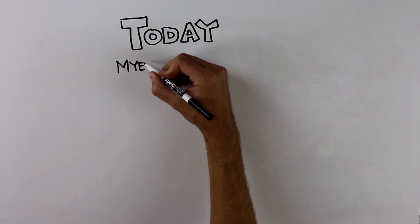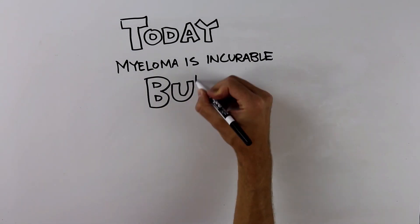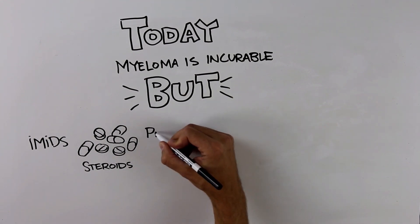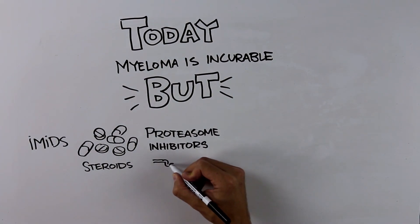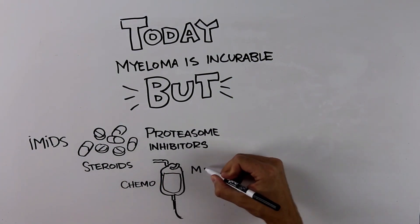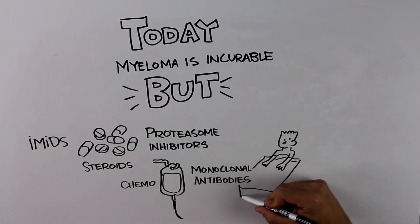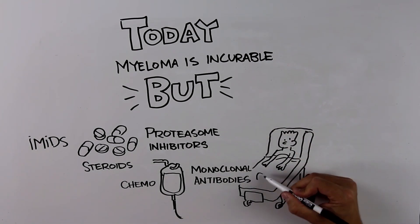Today, multiple myeloma is incurable but very treatable. There are a wide variety of oral medications, infusions, and chemo that are used effectively to treat myeloma. With so many options, the drugs can be combined to effectively and individually treat each patient. These combinations are commonly used in addition to stem cell transplant.